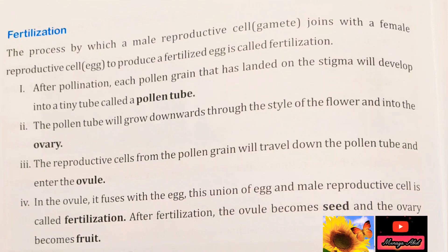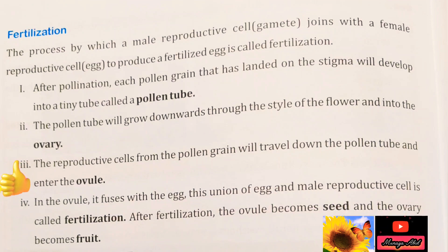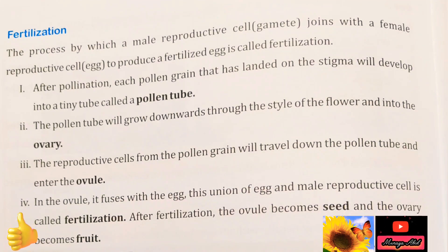In flowering plants, this fertilization occurs in 4 steps. The first step is pollination. After pollination, each pollen grain that has landed onto the stigma will develop into a tiny tube called a pollen tube. The pollen tube will grow downwards through the style of the flower and into the ovary. The reproductive cells from the pollen grain will travel down the pollen tube and enter the ovule. In the ovule, it fuses with the egg. The union of egg and male reproductive cells is called fertilization.